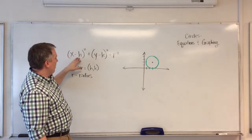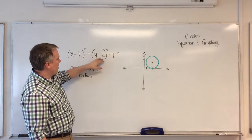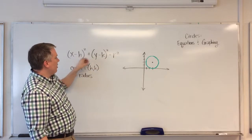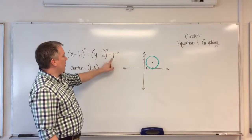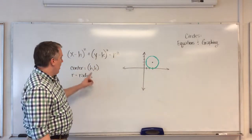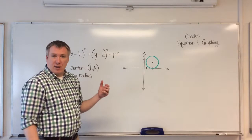It's x minus h squared plus y minus k squared, where h and k, those are just numbers, they represent just numbers, is equal to the radius squared. And h, k is where the center of the circle is.